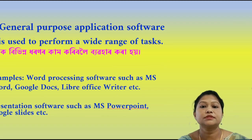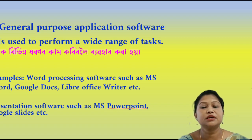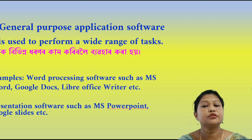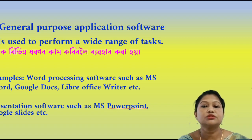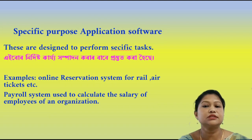General purpose application software can be purchased and used by the general public for various tasks. Examples include word processing software like MS Word, Google Docs, and LibreOffice Writer; presentation software like MS PowerPoint and Google Slides; and internet browsers like Internet Explorer, Mozilla Firefox, and Google Chrome.